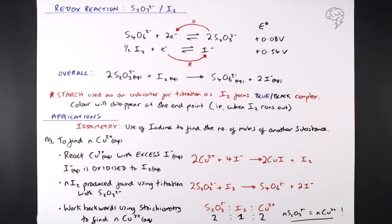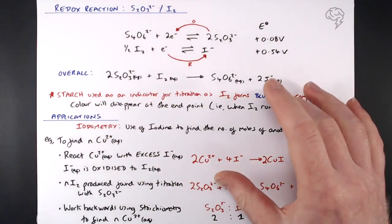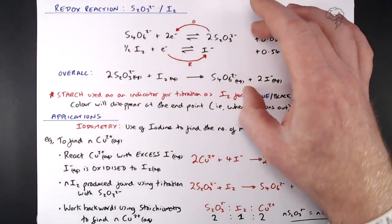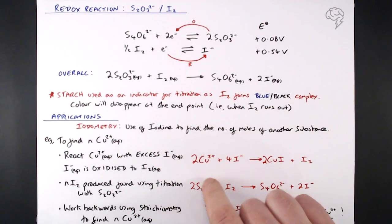So this redox reaction between thiosulfate and iodine, really important. Not so much for the reaction itself, but what it can do to help us find, for example, the number of moles of Cu2 plus in solution using this process known as iodometry.